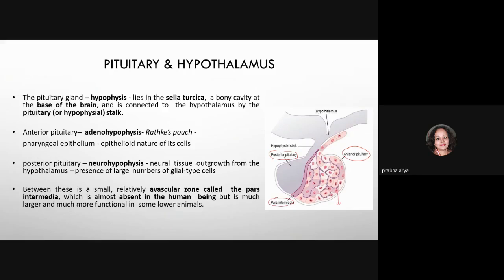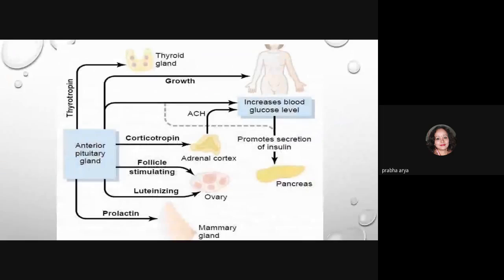The anterior pituitary contains different kinds of cells — acidophils, basophils, and neutrophils — based on their staining properties. These cells are responsible for the release of different hormones, which either stimulate other glands to release their own content or have direct effects on the body.